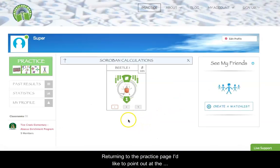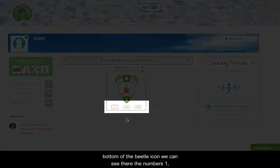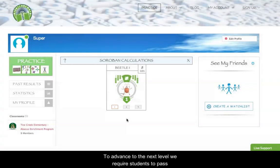So returning to the practice page, I'd like to point out that at the bottom of the Beetle icon here we can see there are the numbers 1, 2, and 3. To advance to the next level, we require students to pass 3 practice quizzes. In this way we can ensure that a student has mastered the skill at that level before proceeding on to the next level.